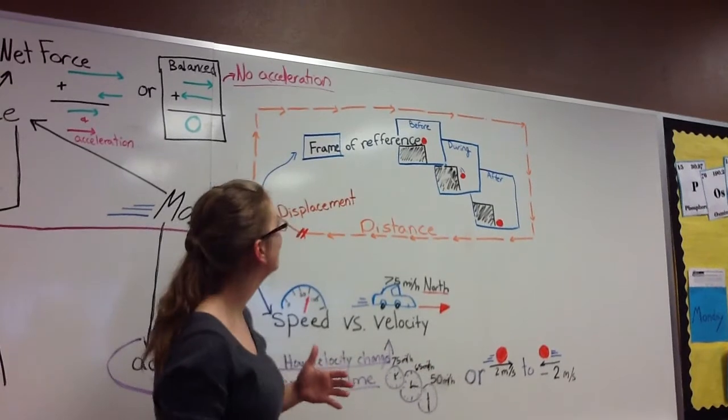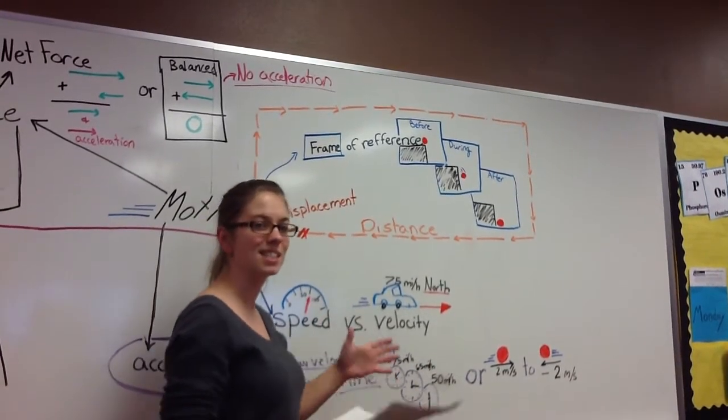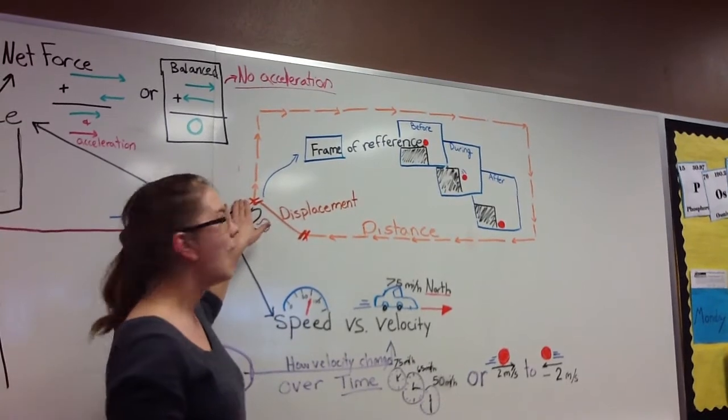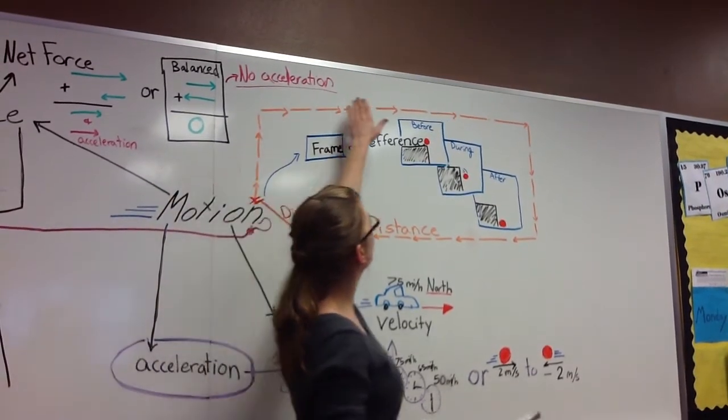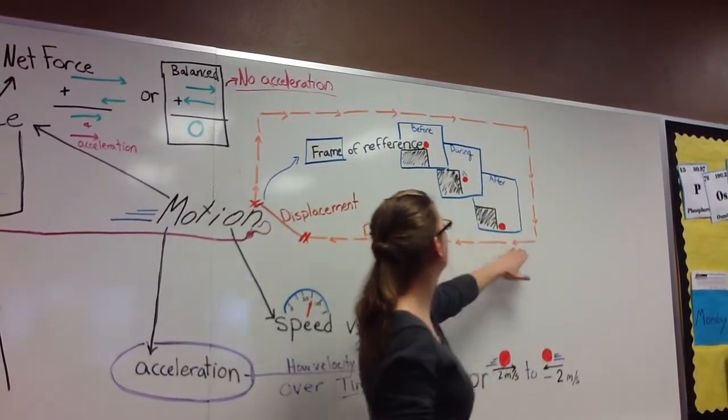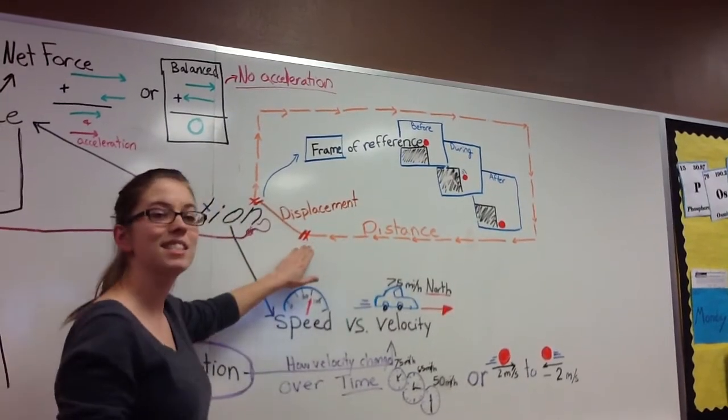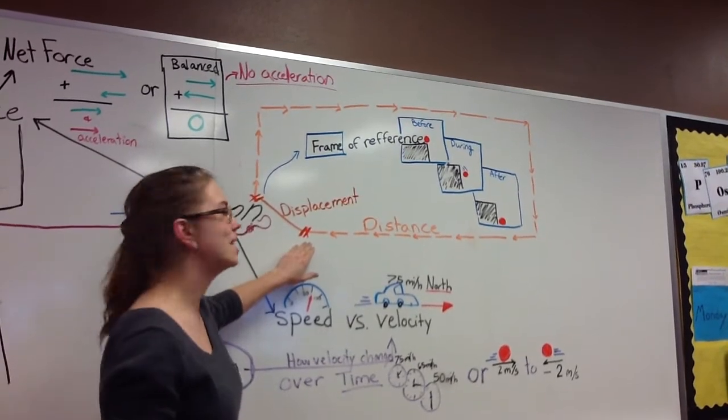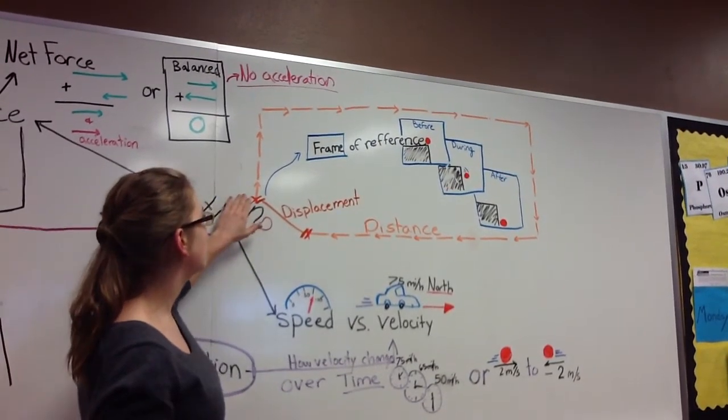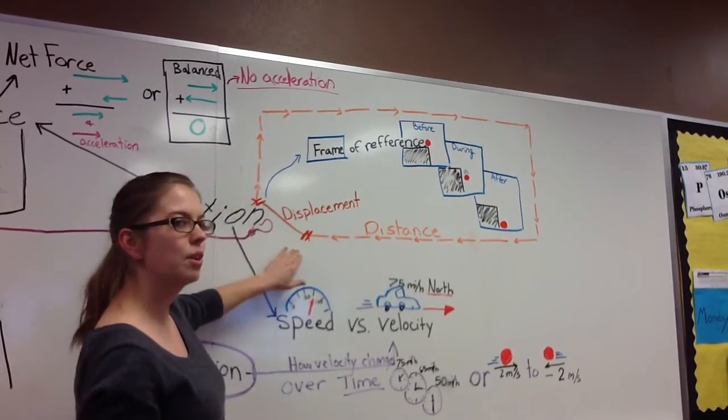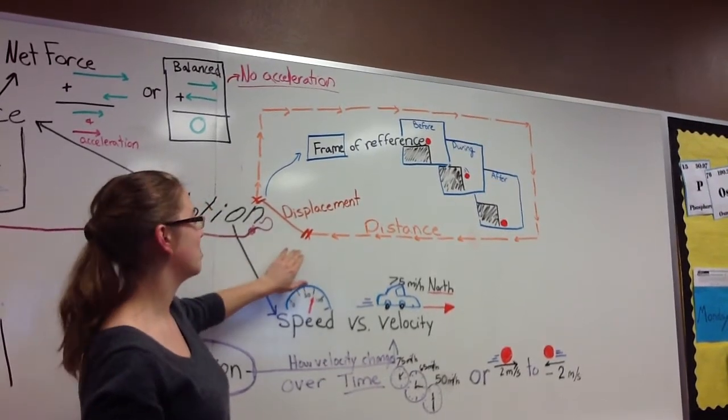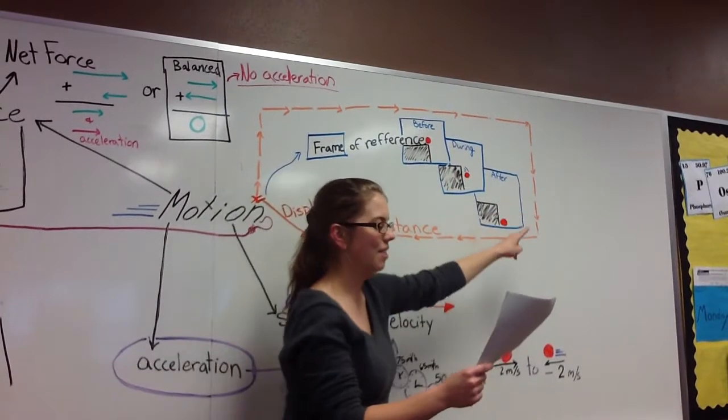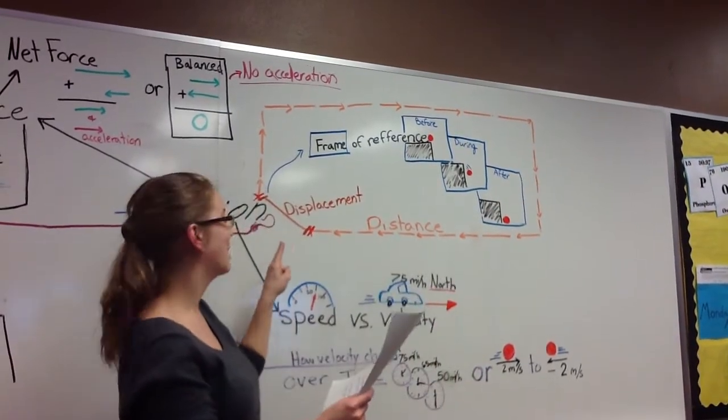The second big idea is the difference between distance and displacement. So, if I start here, and I move all the way around in a circuit, that's the distance I've traveled. The difference between displacement and distance is displacement is the shortest route between my starting point and my ending point. That's my displacement. My distance was the whole path that an object goes.